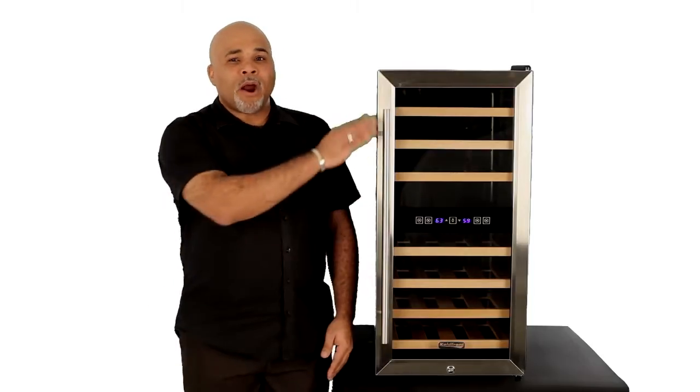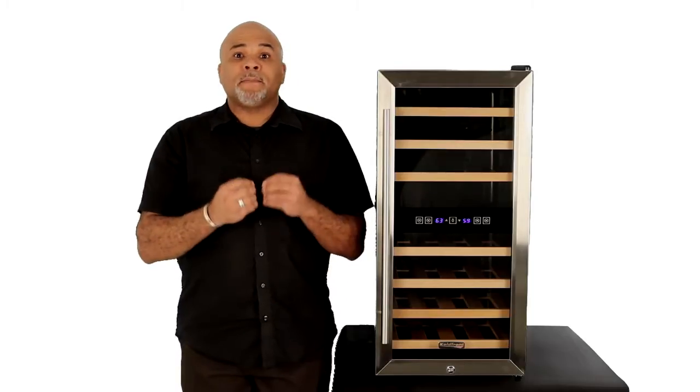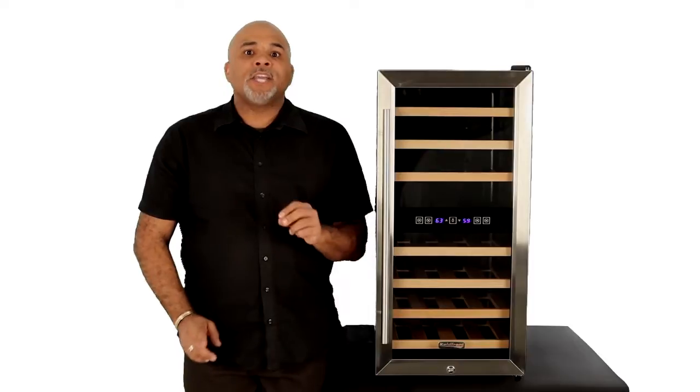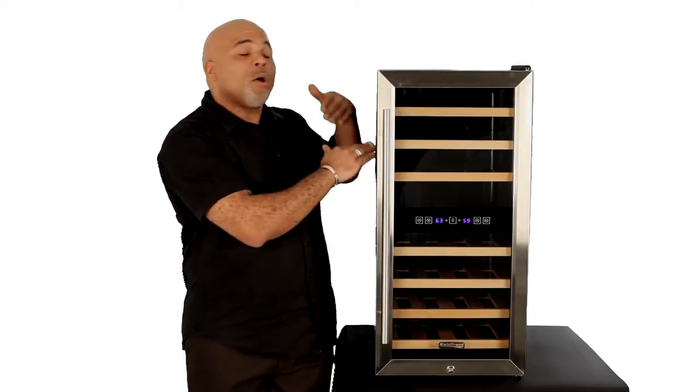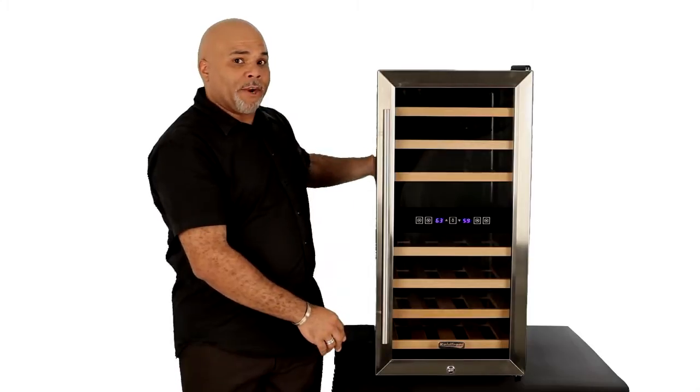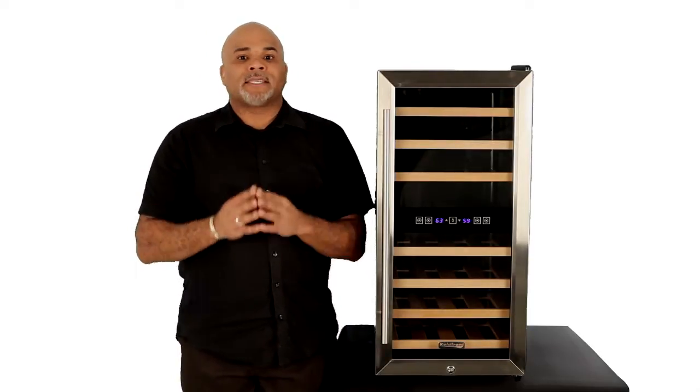The TWR-327ESS is also a freestanding unit, which means you need to make sure you have enough ventilation room around it. Ideally, you'd like to have two to three inches on each side as well as three to four inches in the rear. That way the unit will ventilate properly and help it last longer.